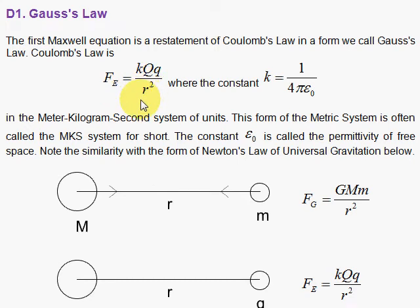And in the metric system where you have meters, kilograms, and seconds, the MKS system, then the constant k, which is the constant that defines the electric force in these units, is 1 over 4π epsilon sub nought.